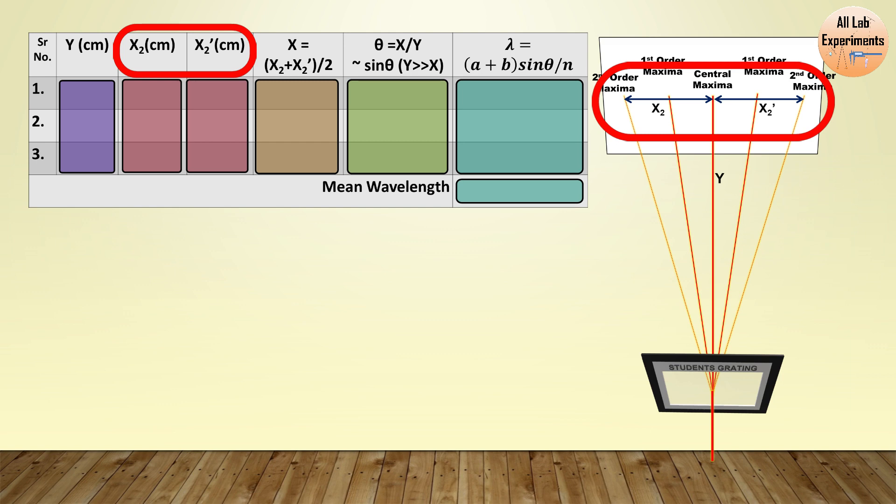And finally we will take a mean of them and exactly the same way we will take the ratio of X and Y. And in the last step we calculate the wavelength λ, but in this case the value of small n is 2 because we are performing this for second order maxima.